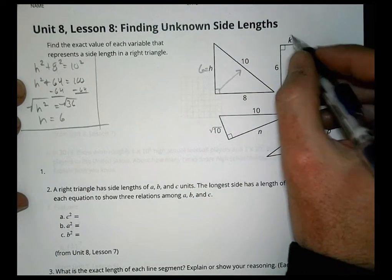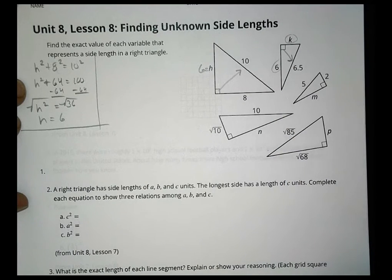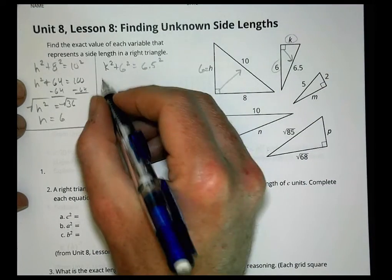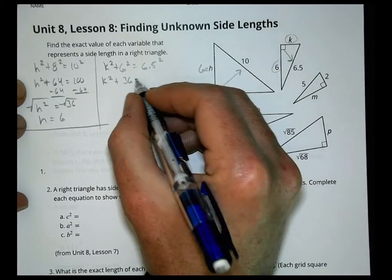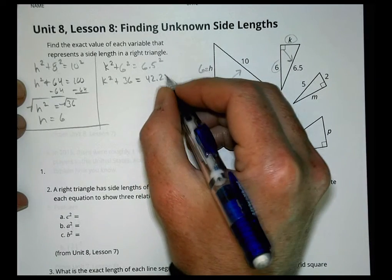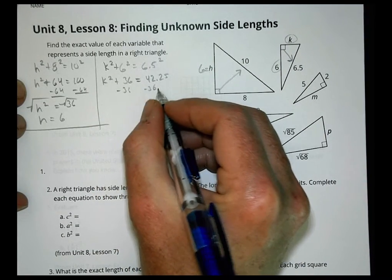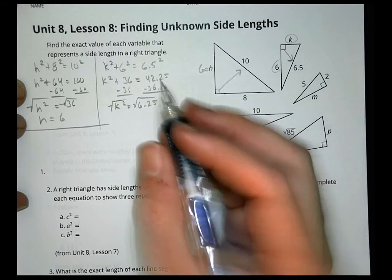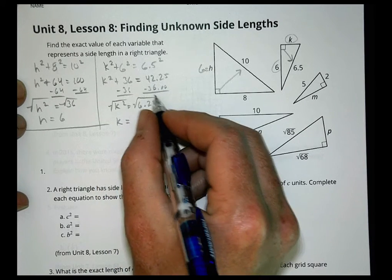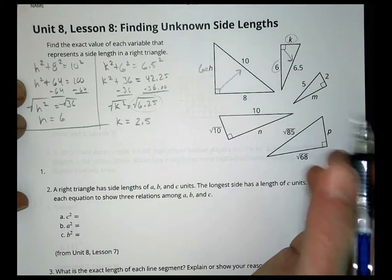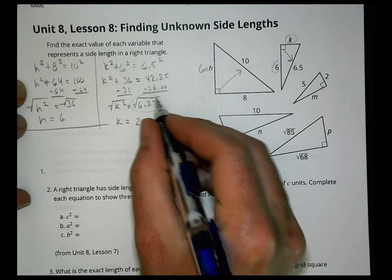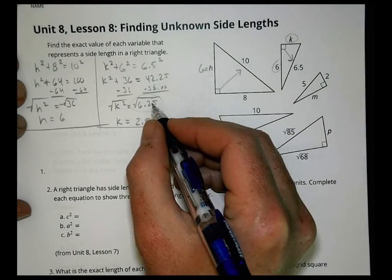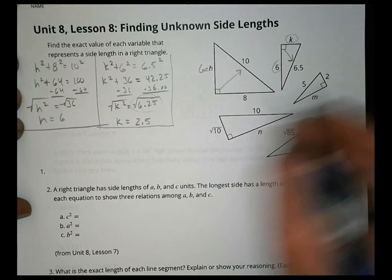Problem 2: k and 6 are legs, so k² plus 6² equals 6.5². That gives k² plus 36 equals 42.25. Subtract 36: k² equals 6.25. Take the square root: k equals 2.5. I wasn't sure what the square root of 6.25 was, but using a calculator it comes out to 2.5 — a nice number. If you got that far and left it as the square root, that's great too, but it's worth checking with a calculator.